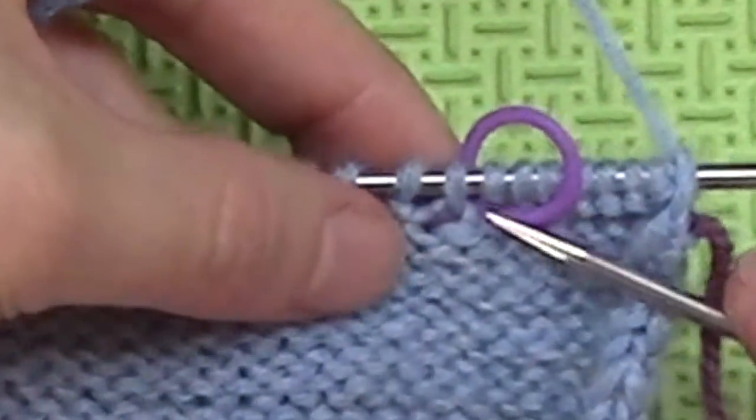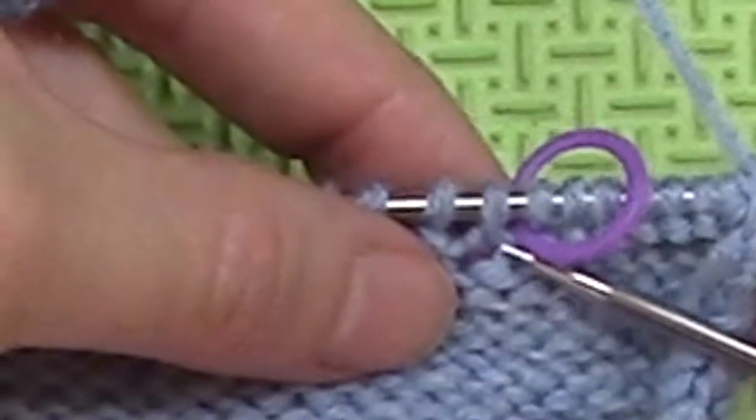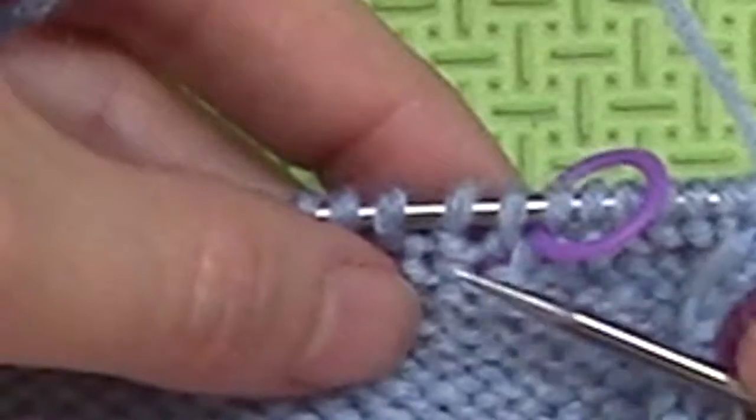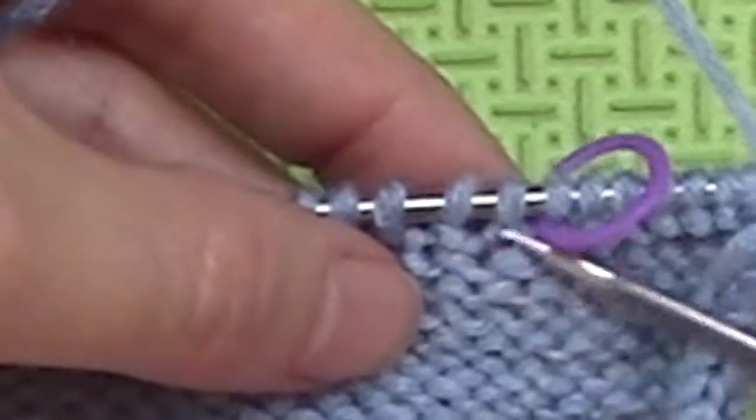So this first stitch is an example. That is knit. That's a knit stitch because you see legs. This one is a purl stitch because you see a bump.